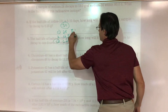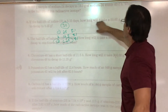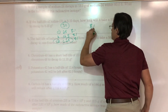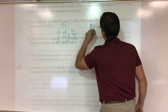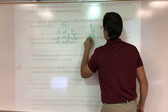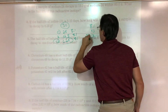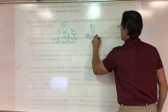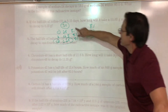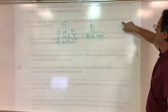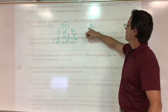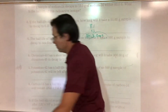The half-life of iodine-131 is 8.1 days, so multiply 8.1 times 3. That gives 24.3 days. This time the problem gave me the half-life and asked how long it takes to go from 50 grams down to 6.25 grams — three half-lives, so 8.1 times 3 equals 24.3 days.